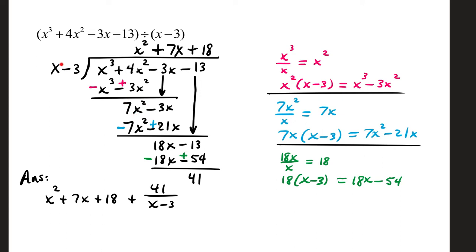7x squared divided by x is 7x. That goes in the quotient. 7x times the divisor is 7x squared minus 21x. Write that underneath. Change your signs — this term's positive, change it to negative; this term's negative, change it to positive. First column adds up to 0. Second column adds up to 18x, and when you drag your last term down you get 18x minus 13. Then switch to green ink and go through the last cycle.